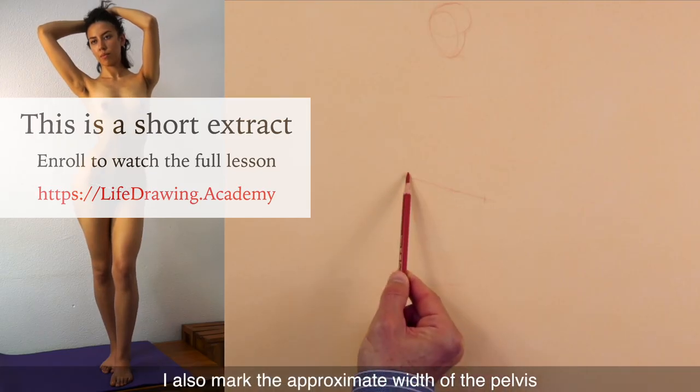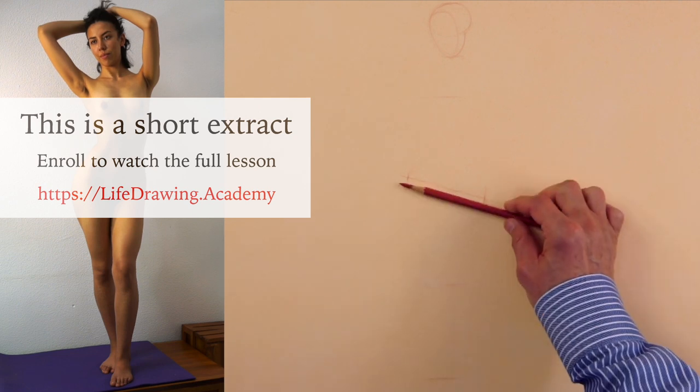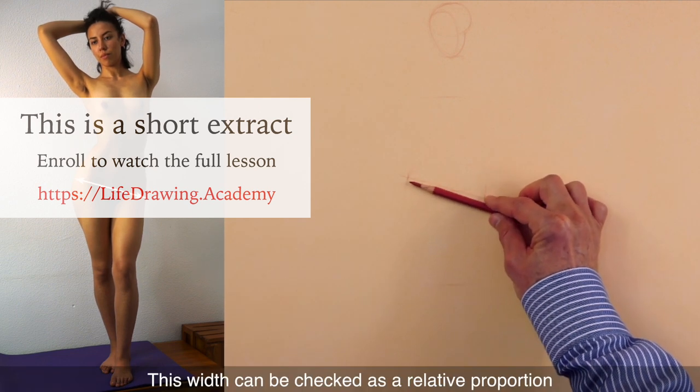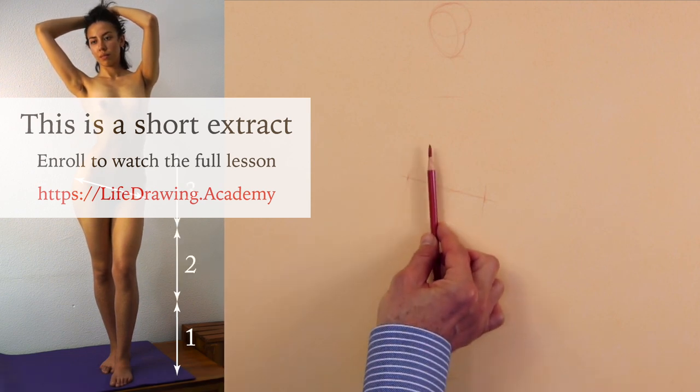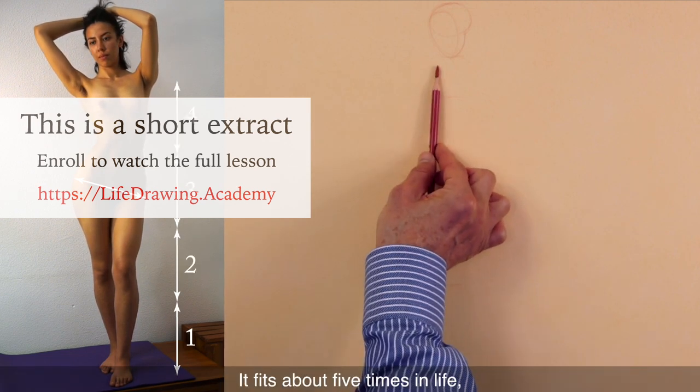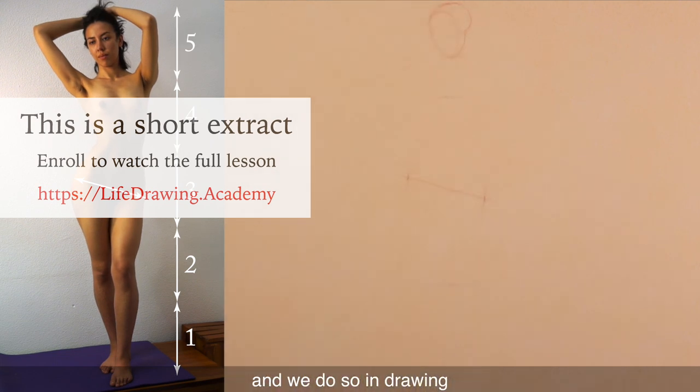I also mark the approximate width of the pelvis. This width can be checked as relative proportion to the height of the body. It fits about five times in life, and we do so in drawing.